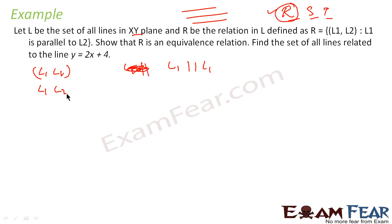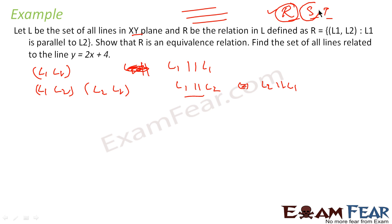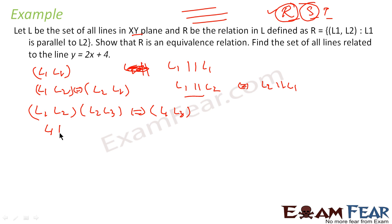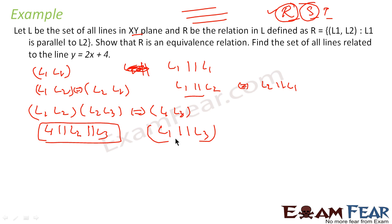For symmetric: if L1 is parallel to L2, this automatically implies L2 is parallel to L1. So (L2, L1) is part of the set, making it symmetric. For transitive: if (L1, L2) is in the set and (L2, L3) is in the set, meaning L1 is parallel to L2 and L2 is parallel to L3, then all three lines are parallel to each other, so L1 is parallel to L3. Thus (L1, L3) is in the set and it is transitive. I have proved that it is an equivalence relation.